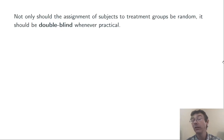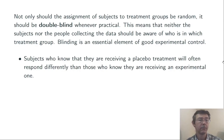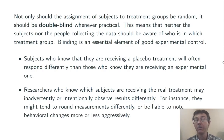Not only should the assignment of subjects to treatment groups be random, it should be double-blind whenever possible. That means that neither the subjects nor the people collecting the data should be aware of who is in which treatment group. This is an essential element of good experimental control. Subjects who know they're receiving a placebo will respond differently than those who don't know, or who know they're receiving an experimental treatment. Researchers who know which subjects are receiving the real treatment may inadvertently or intentionally observe results differently — they might round measurements differently, or be liable to note behavioral differences more in the treatment group than in the control group.